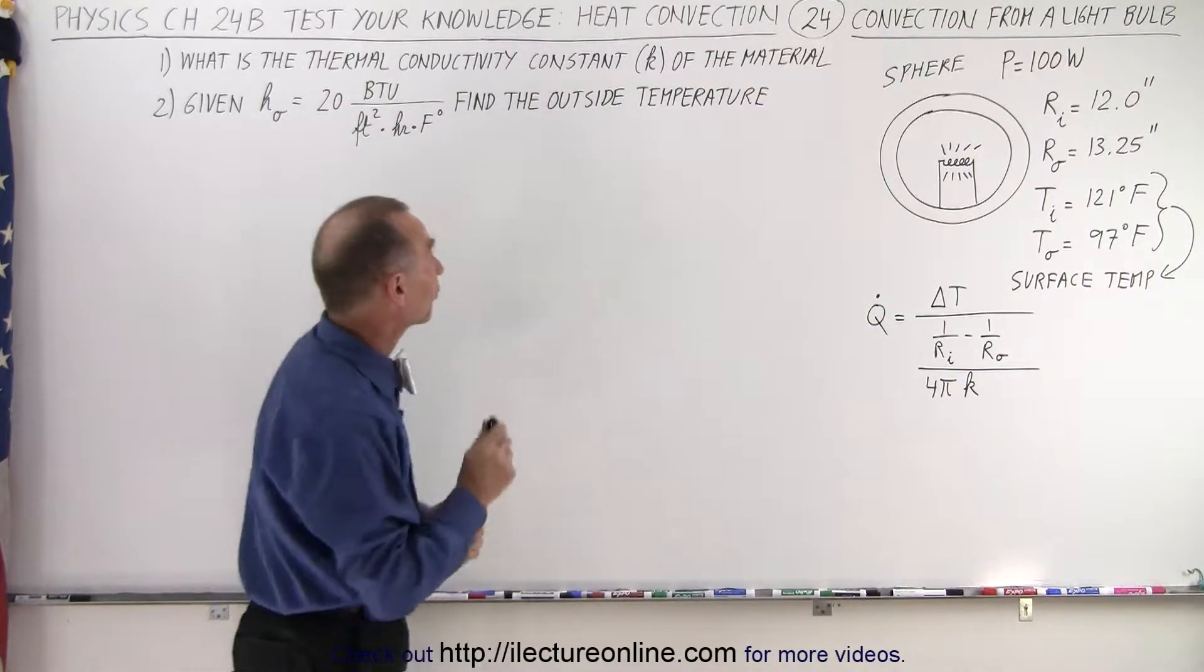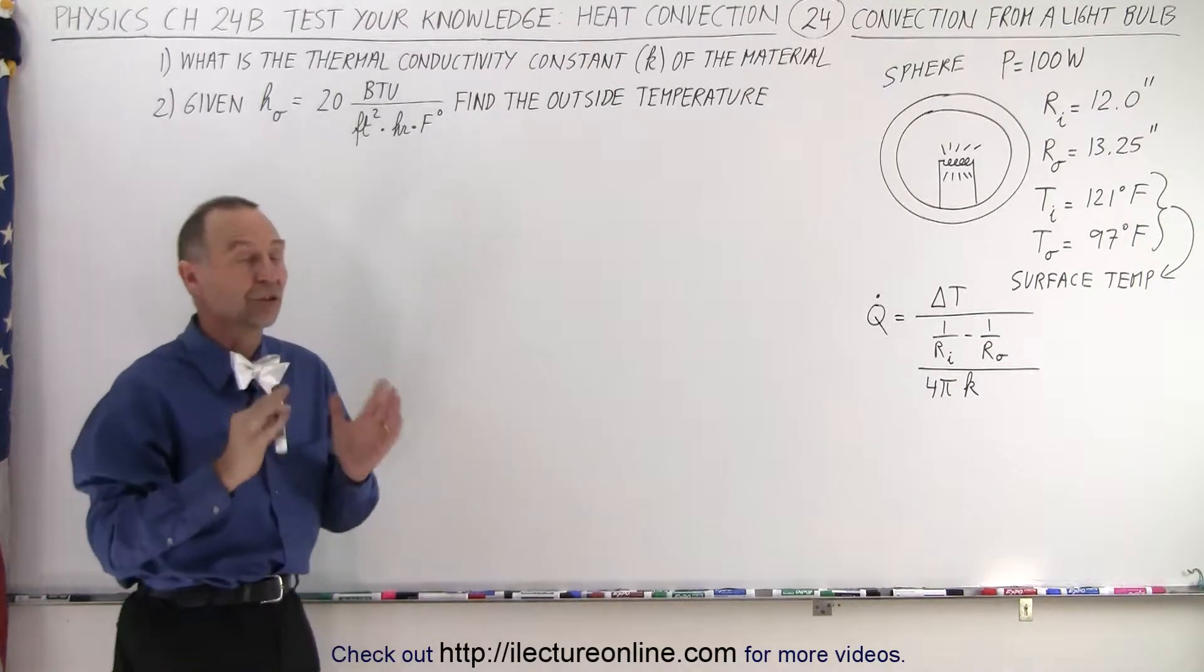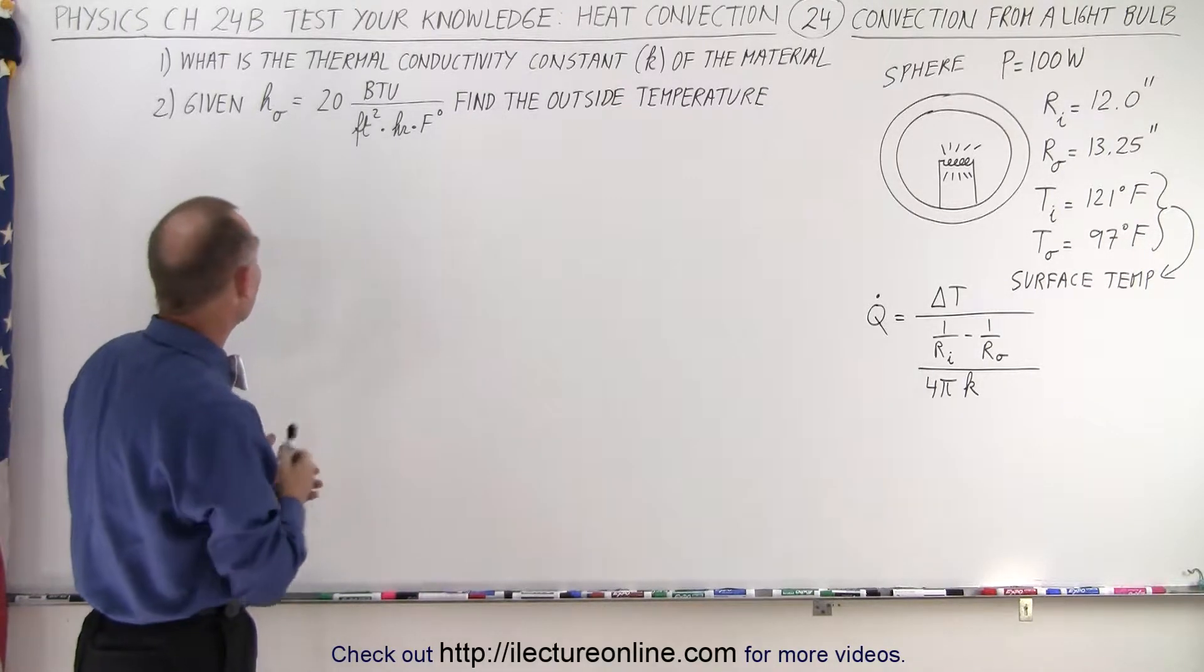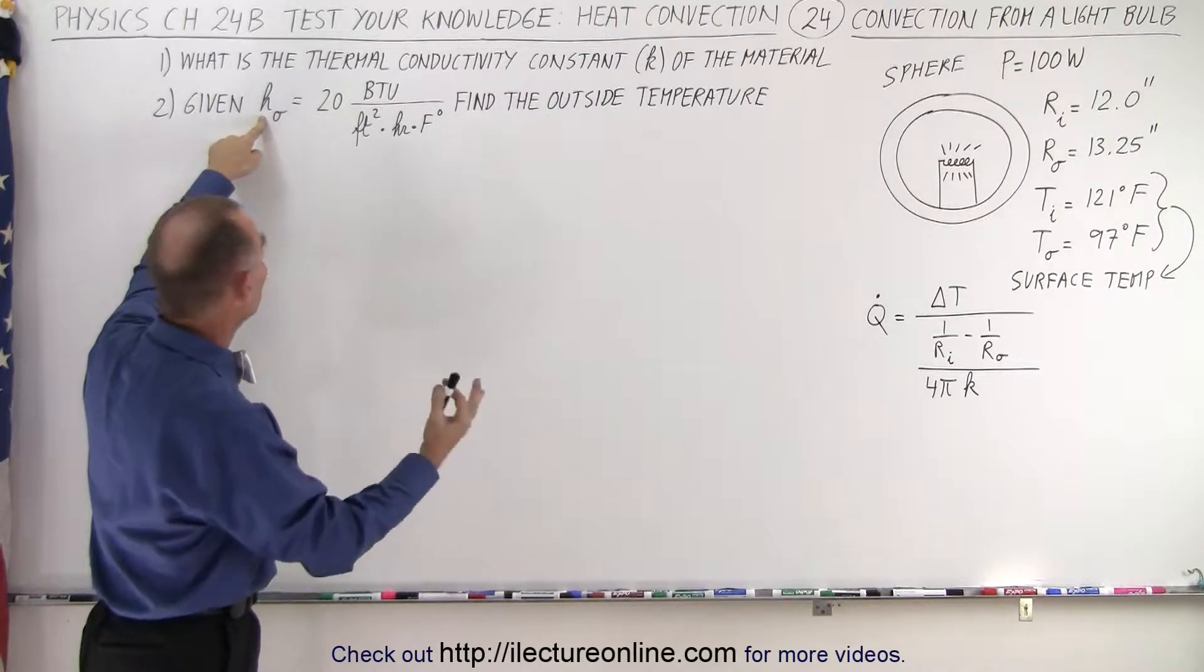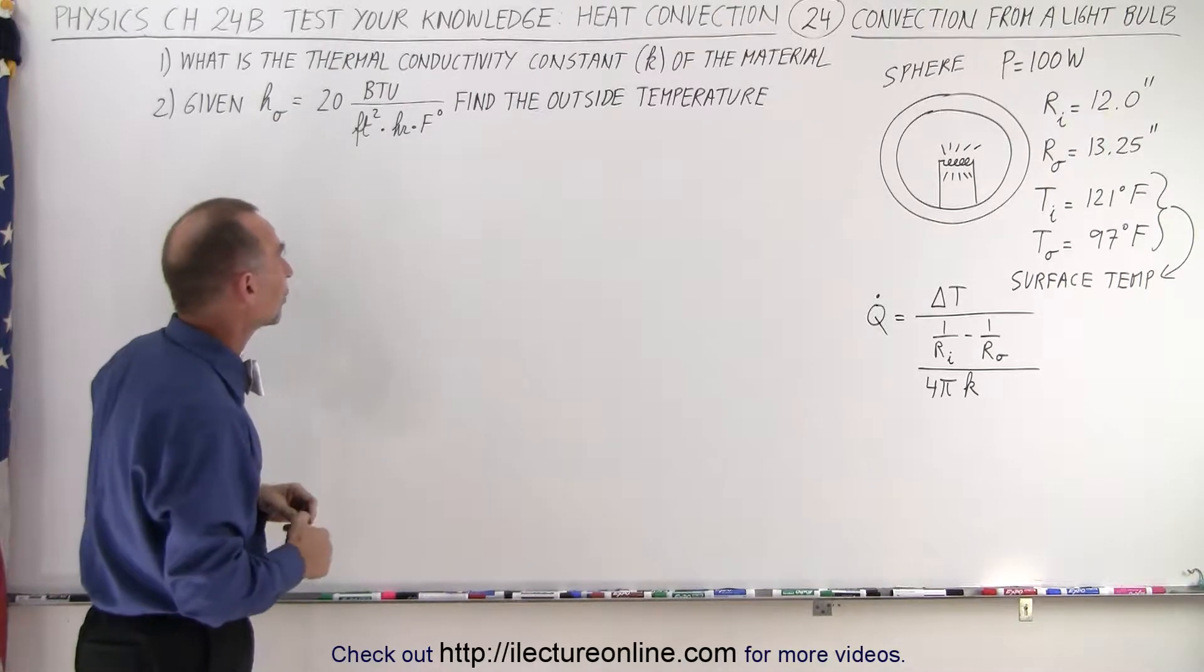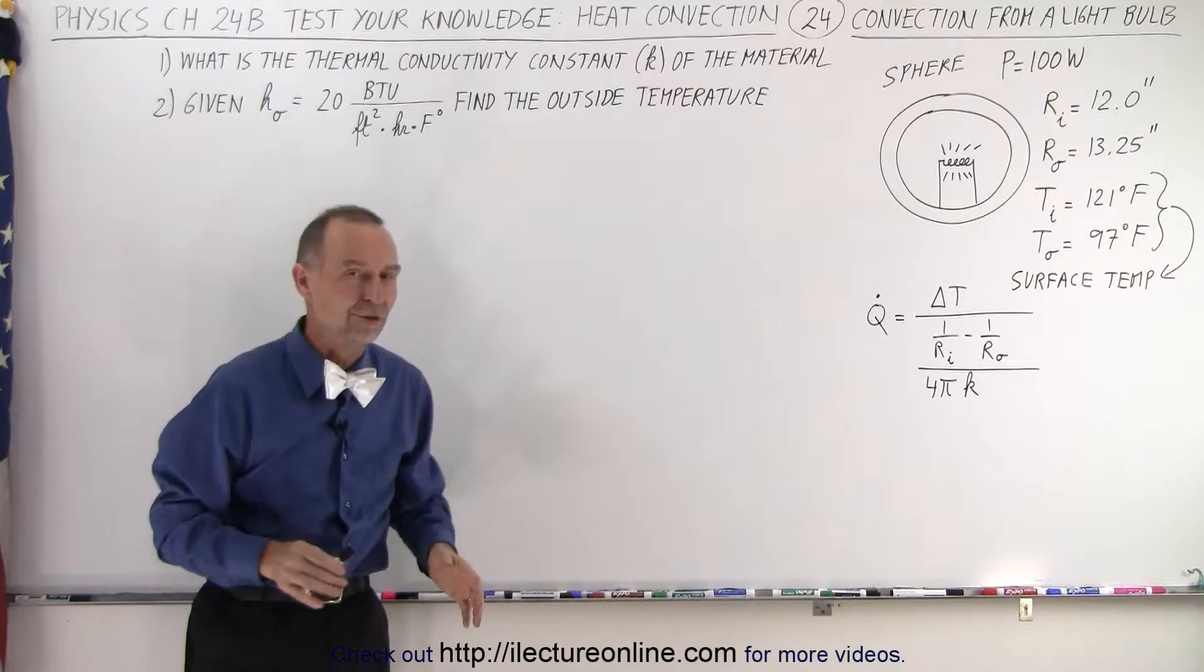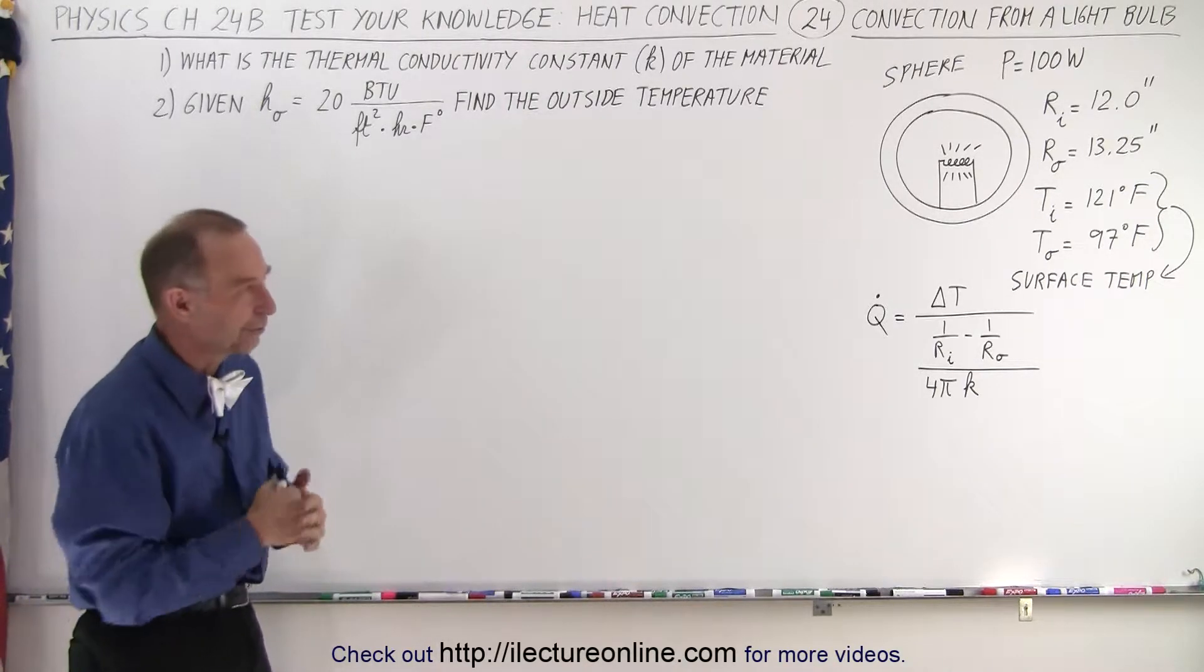So they're asking us two things. First of all, what is the thermal conductivity constant of the material? And secondly, once we find that, given the transmission coefficient due to convection of 20 BTUs per square foot per hour per Fahrenheit degree, find the outside temperature. And you can see here that we're dealing with imperial units, so we need to do some conversion.